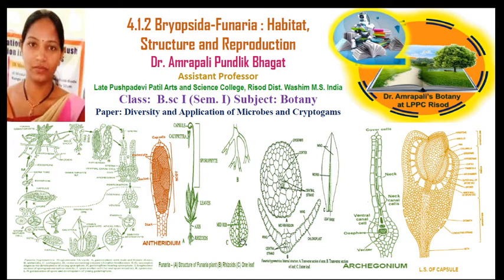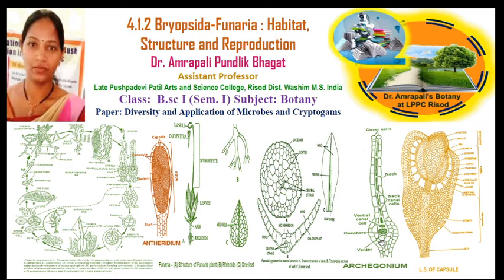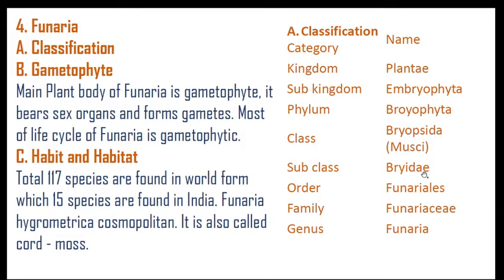When we take a transverse section through the stem, it shows a particular structure. This is the transverse section taken through a leaf. For the purpose of propagation or reproduction, they have developed archegonium and antheridium. This one is the archegonium, this one is the antheridium, and here is the complete developed capsule in longitudinal section.